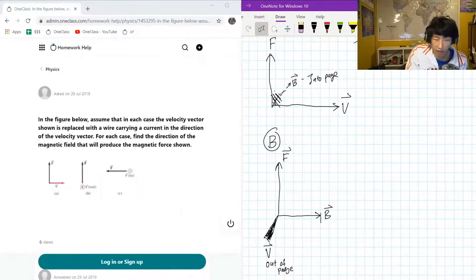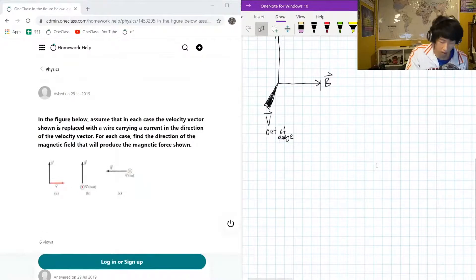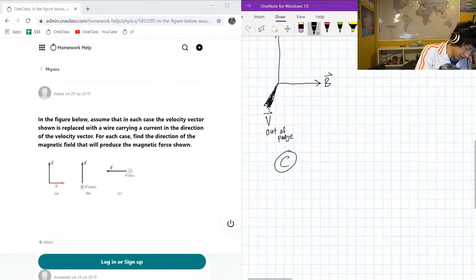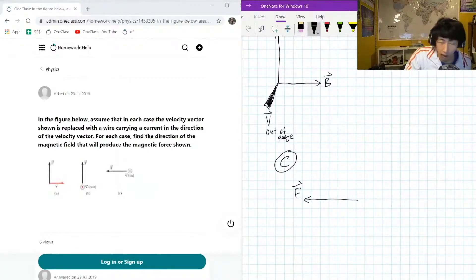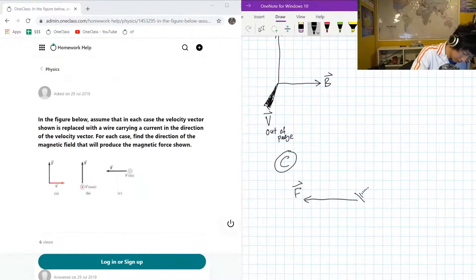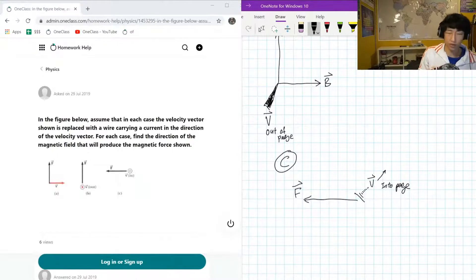Okay, and our final thing is going to be our C. So let's see what C is all about. We have our force going towards the left. And we have our V going into the page. Okay, so I'll represent it like this. Okay, so following the same procedure, our fingers going into the page, our thumb going towards the right.